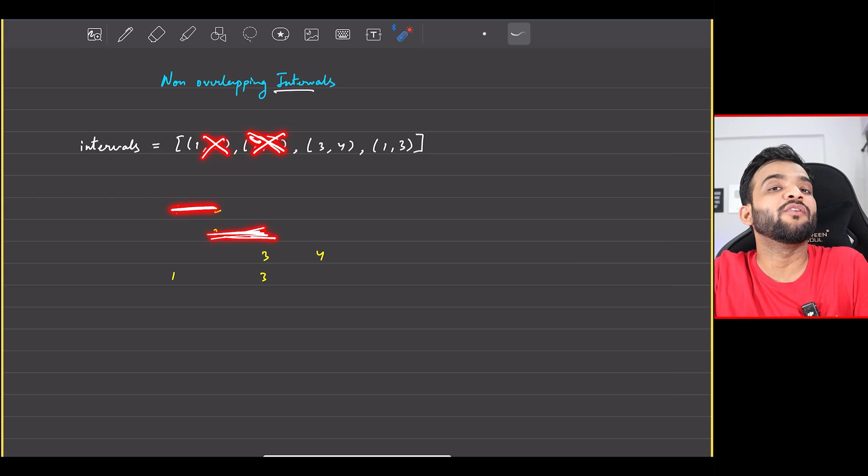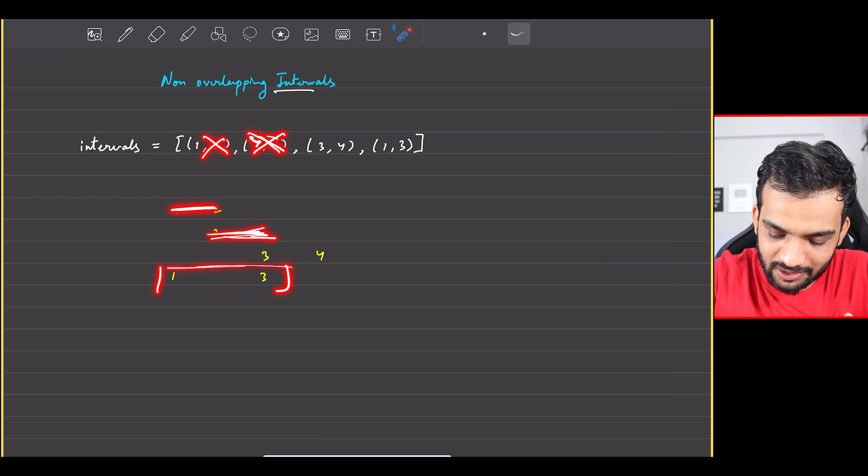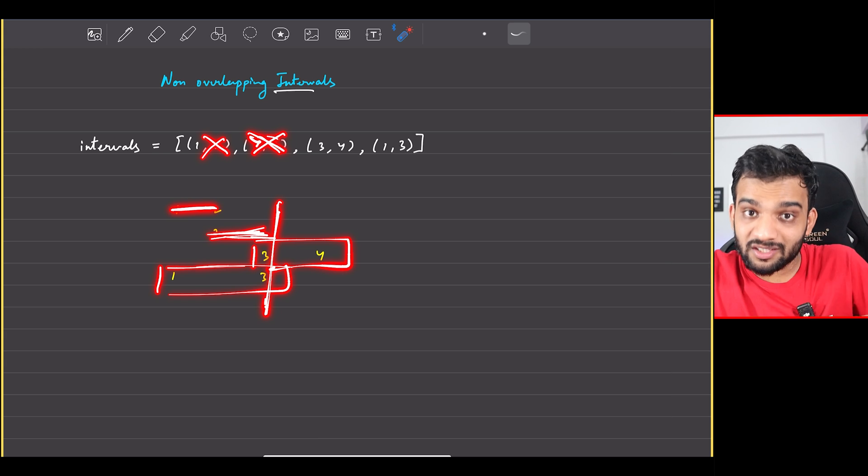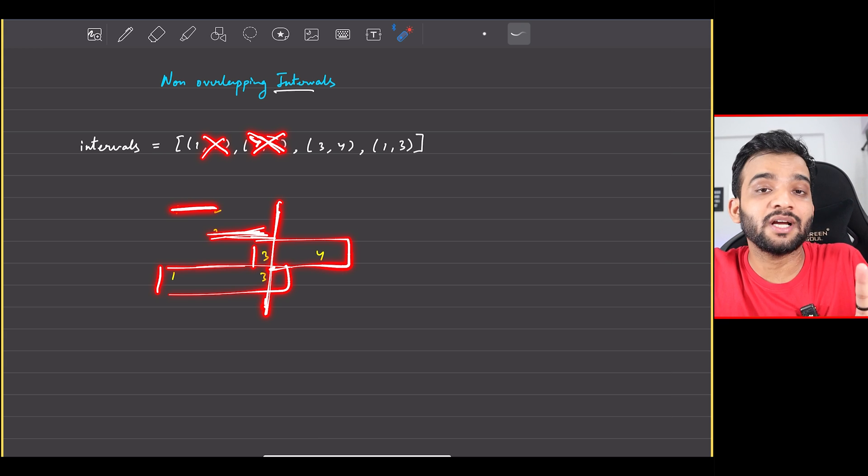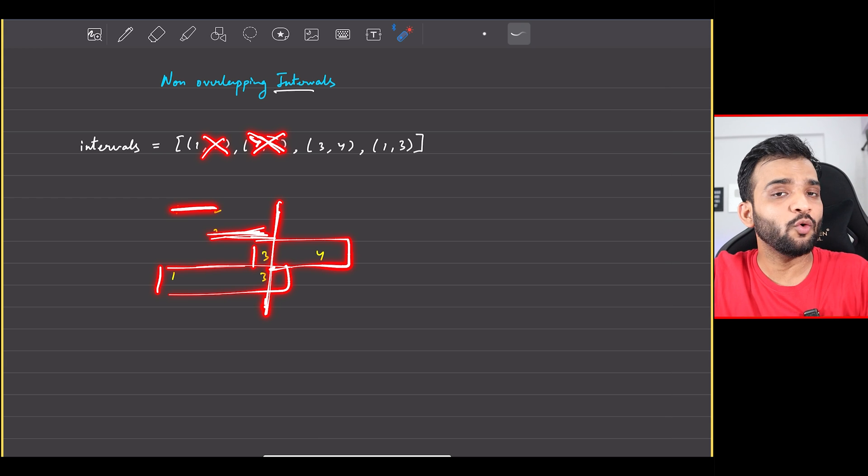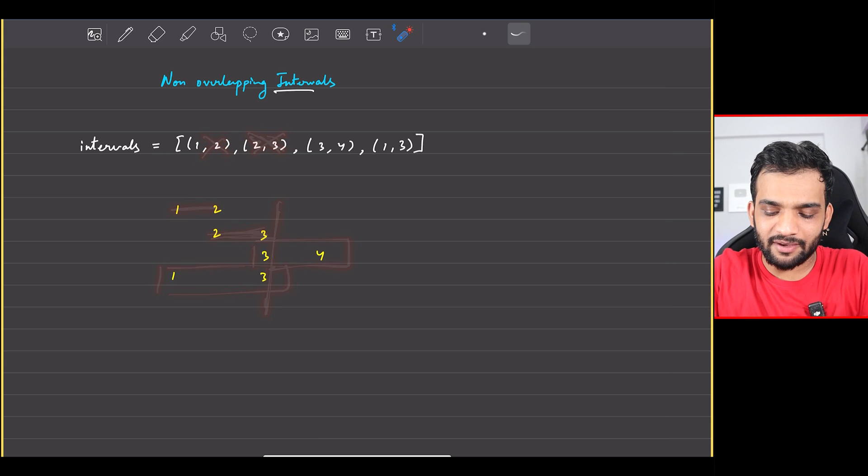If I remove these two, there is no overlap. (1,3) and (3,4) - there is no overlap. You might say this is an overlap, but in this particular question this is not considered to be an overlap. In all other interval questions yes, in this question no, there is no overlap.